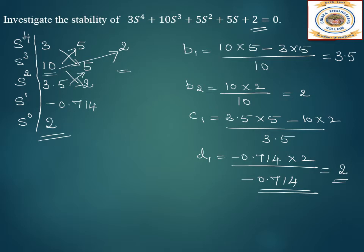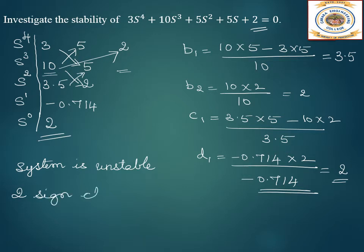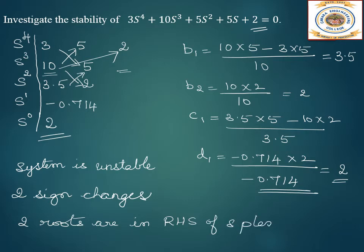Now check the first column of the Routh array. We have a negative sign there, so the system is unstable. Counting sign changes: 3, 10, 3.5 are all positive; 3.5 to −0.714 is one sign change; −0.714 to +2 is another. Therefore two sign changes, meaning two roots are in the right-hand side of the s-plane.